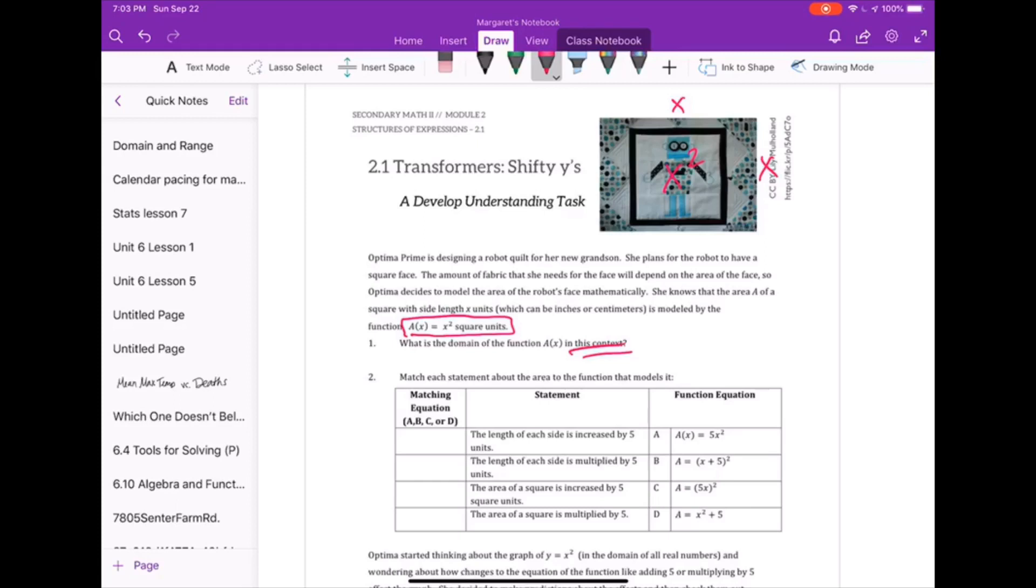It says that we want to think about the context of the area of the square. It doesn't make much sense to have a negative area or even an area of 0. So we know the lowest value of x will be 0, but that won't be included in the domain.